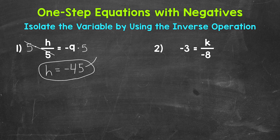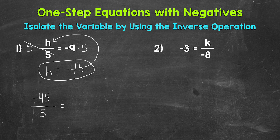We can always check a solution by plugging it into the original equation. Let's plug negative 45 in for h: negative 45 divided by 5 equals negative 9. We have a negative divided by a positive, which equals a negative. Negative 45 divided by 5 does equal negative 9, so we have the correct solution — h equals negative 45.